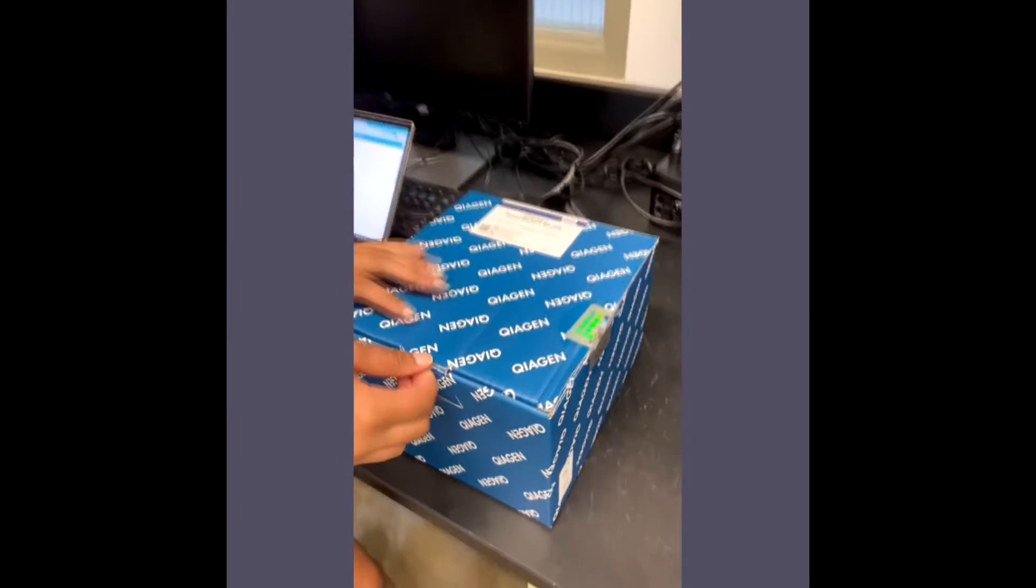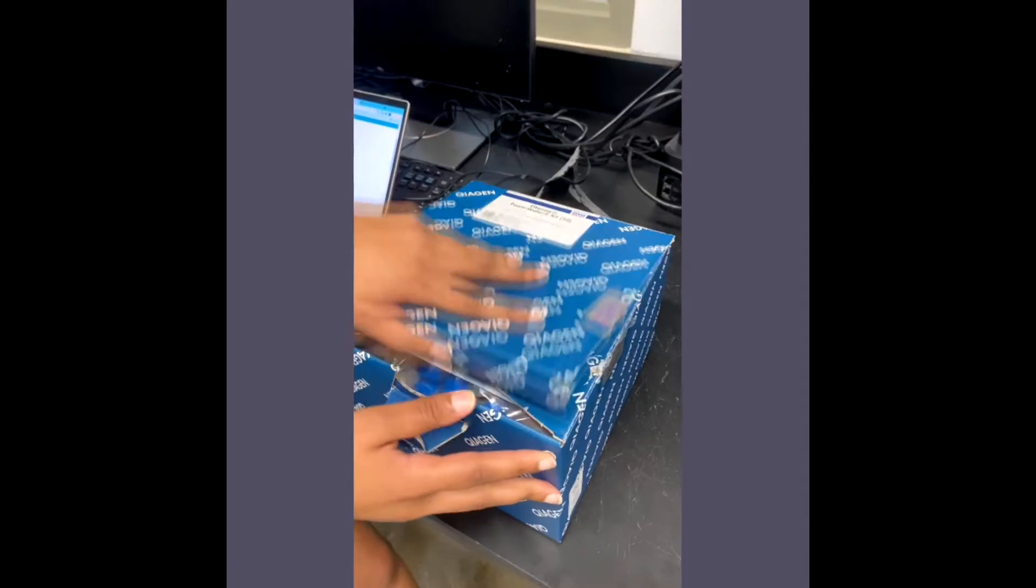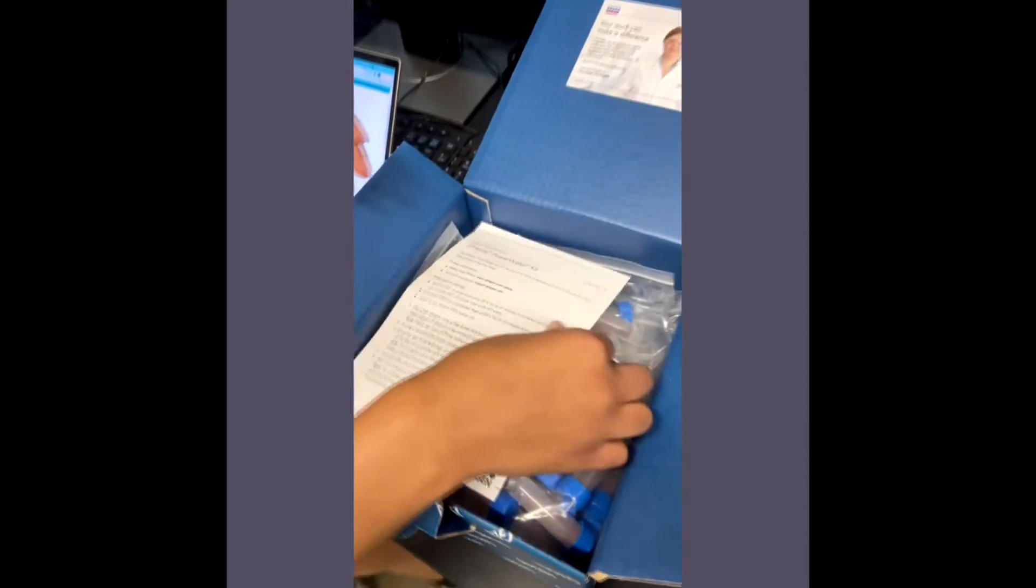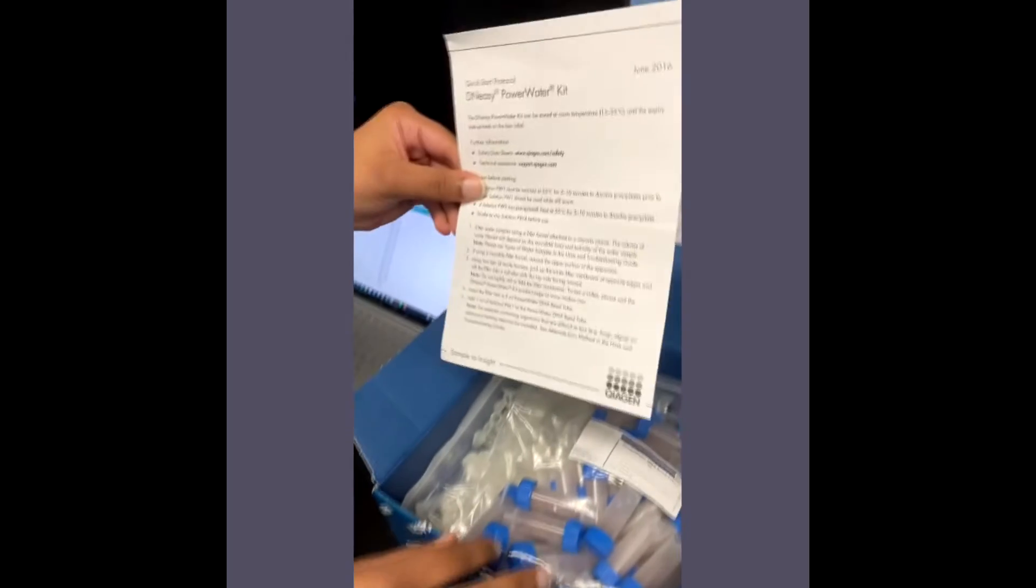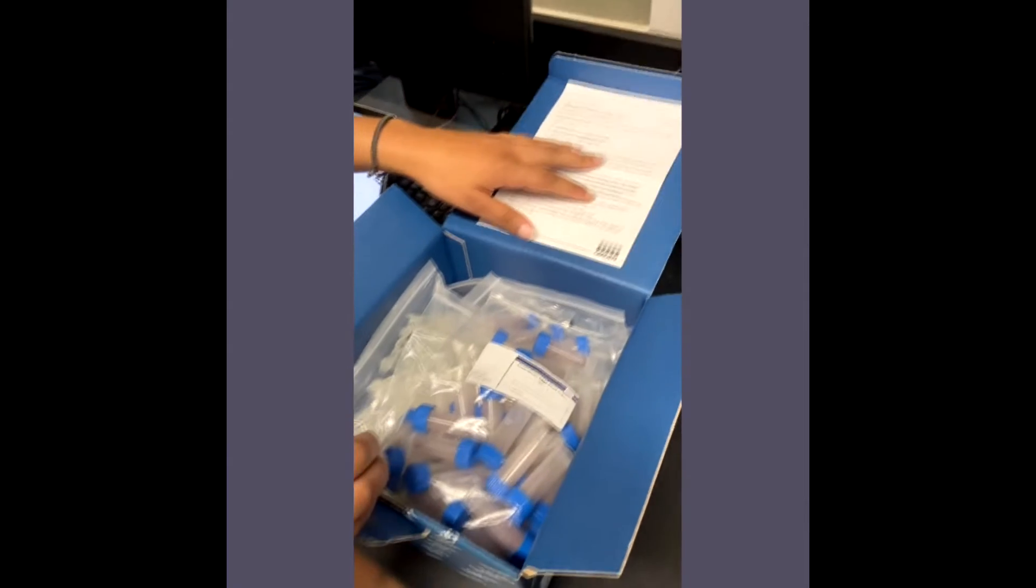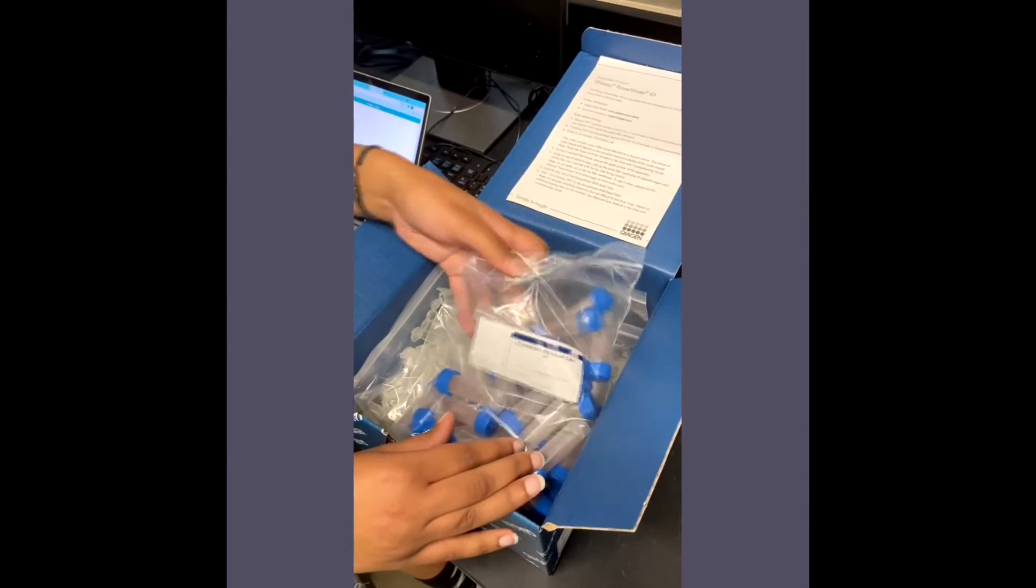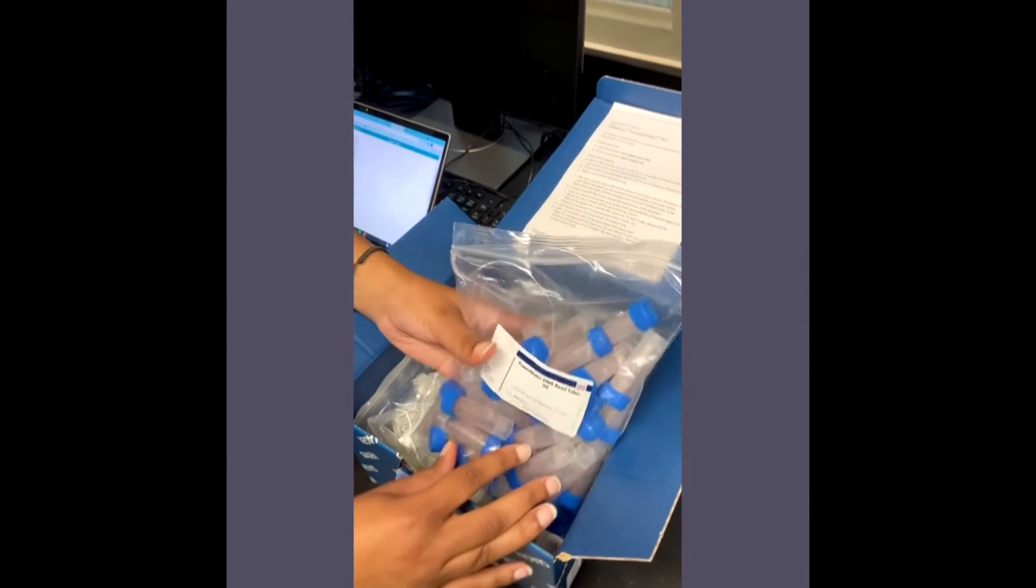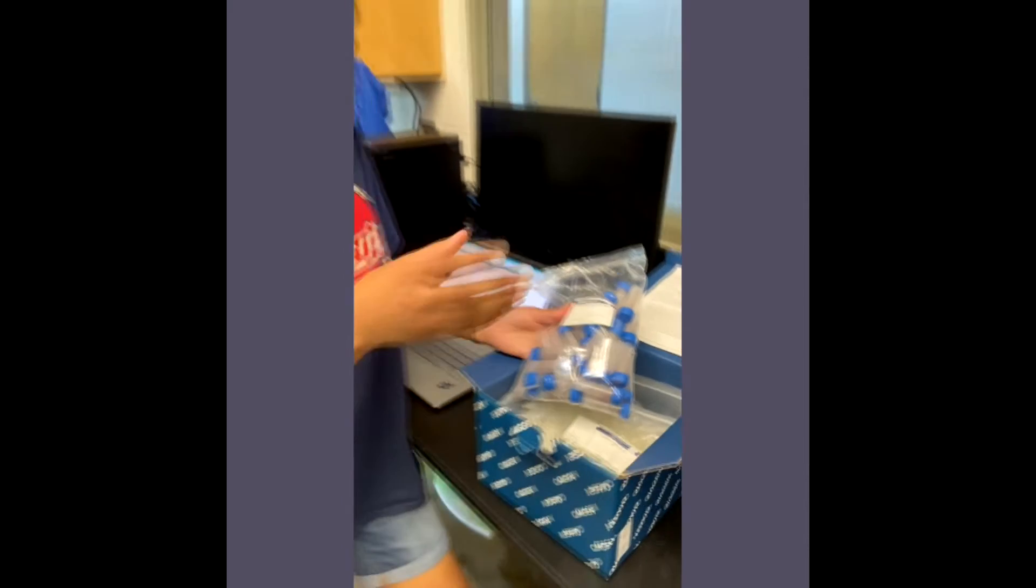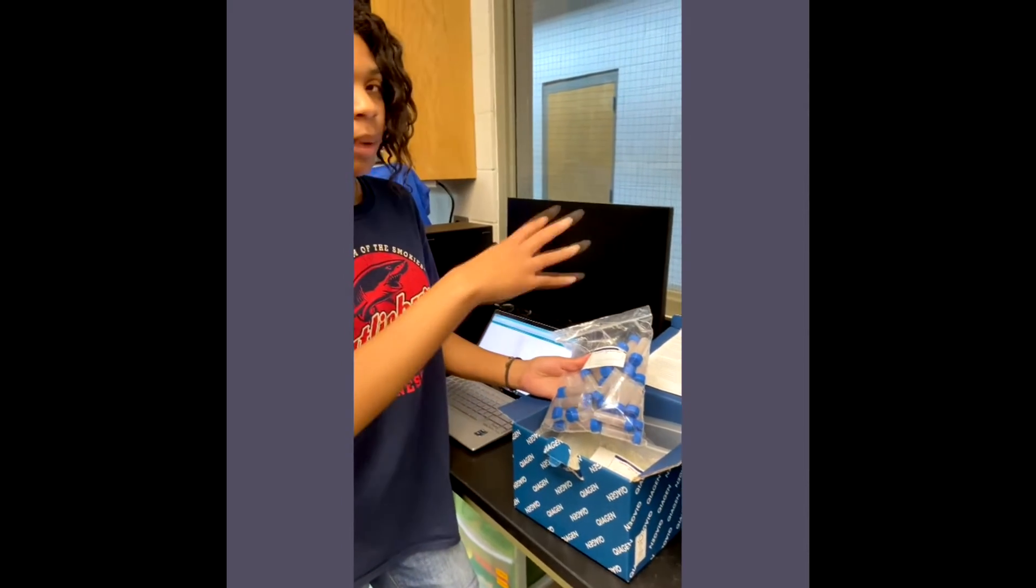So right here next to me is a DNEZ power water kit that we use to do extractions. It comes with a little instruction paper that tells you essentially how to use the different materials. We got some water samples because we want to see if there's any Erysipelothrix floating around in the nearby waters.